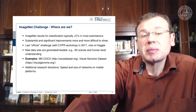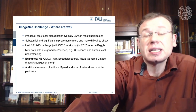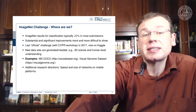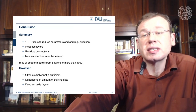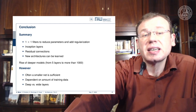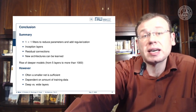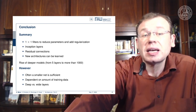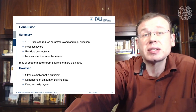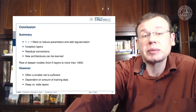Of course there are also different research directions like speed and size of networks for mobile applications, where ImageNet may still be a suitable challenge. To summarize conclusions: one-by-one filters to reduce parameters and add regularization is a very common technique; inception modules are nice because they find the right balance between convolution and pooling; and residual connections are a recipe used over and over again. We've also seen that some new architectures can actually be learned.